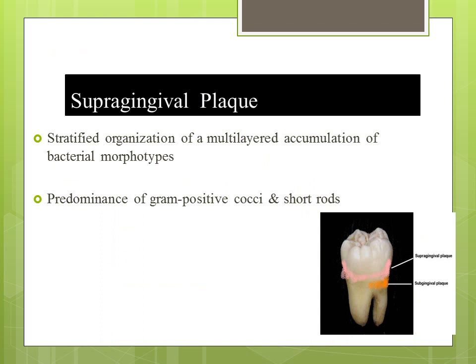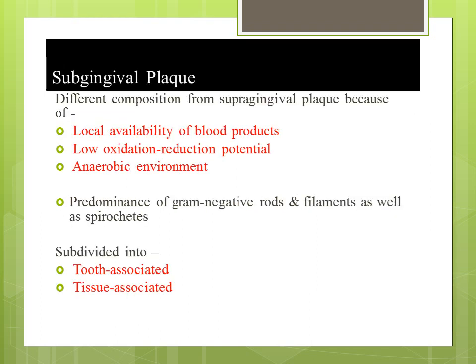Supra-gingival plaque is a stratified organization of a multi-layered accumulation of bacterial morphotypes, predominantly consisting of gram-positive cocci and short rods. Sub-gingival plaque has a different composition compared to supra-gingival plaque due to local availability of blood products, low oxidation-reduction potential, and the anaerobic environment. There is a predominance of gram-negative rods, filaments, and spirochetes in the sub-gingival plaque.